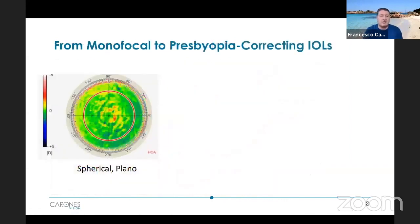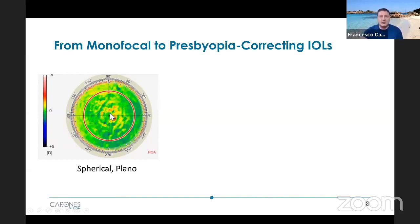Let's start then from a monofocal eye to see how presbyopia-correcting IOLs look by comparison. Here is a spherical plane lens. Don't forget the background noise I was telling you about earlier — a little bit of red and yellow spots — but on average the lens looks green, meaning no dioptric power. These are high order aberrations.